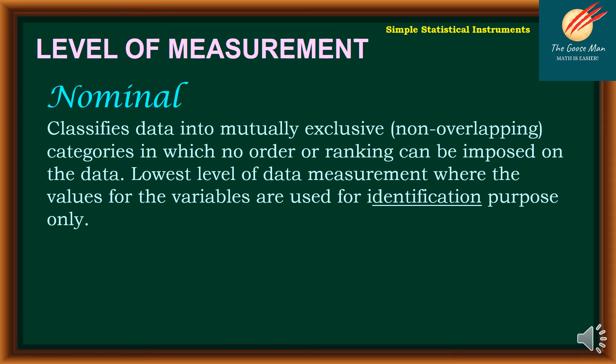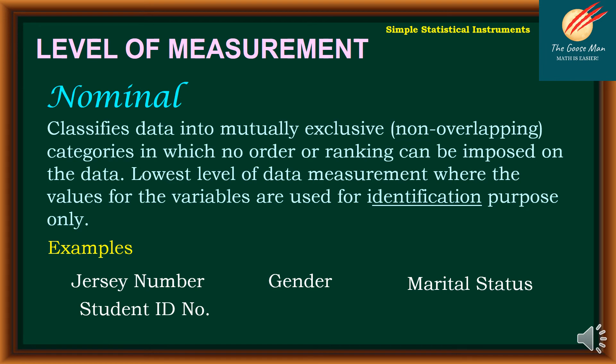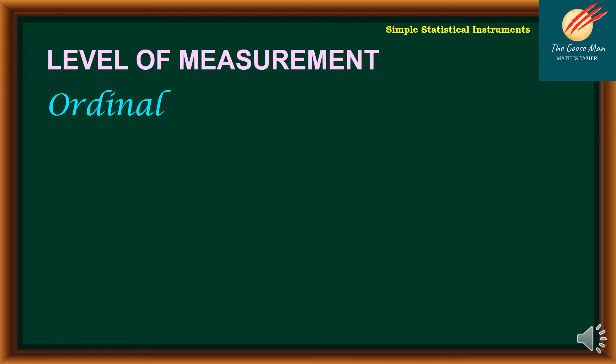Nominal classifies data into mutually exclusive, meaning to say that is non-overlapping categories, in which no order or ranking can be imposed on data. Lowest level of data measurements where the values for the variables are used for identification purpose only. For example, we have jersey number. We can have 1, 2, 3, 4, and so on and so forth. Then, we have also the gender. We can have male or female. Then, we have also marital status. We have also the student number or student ID number. And finally, we have the race.